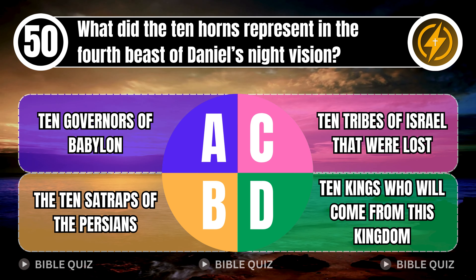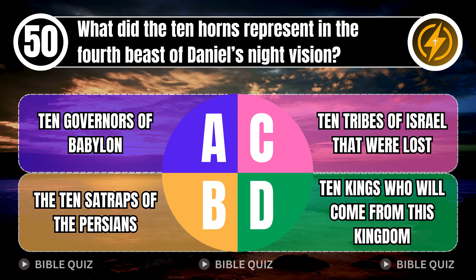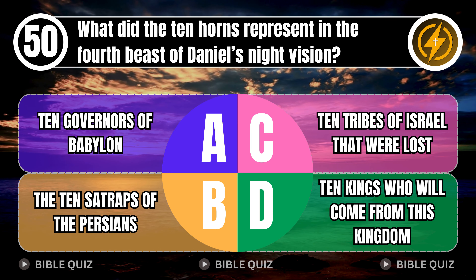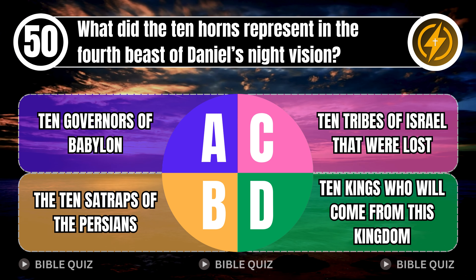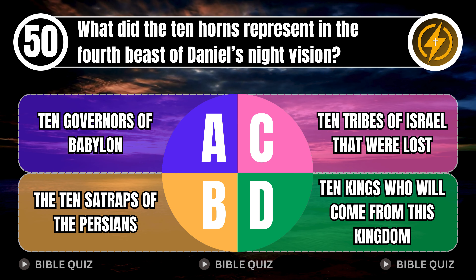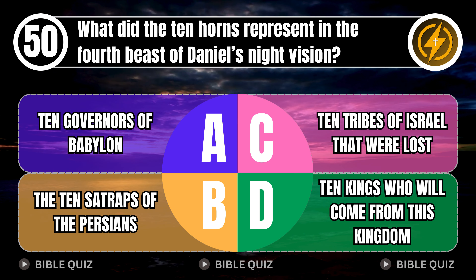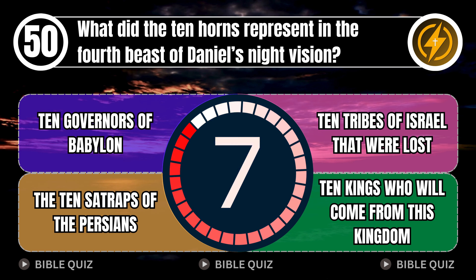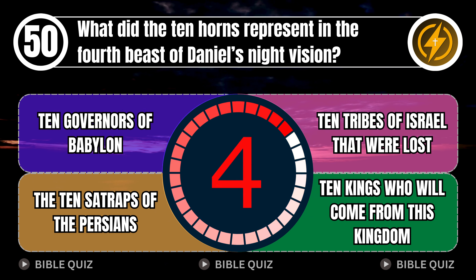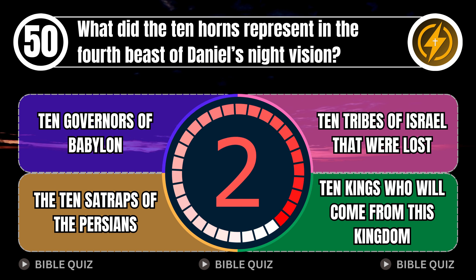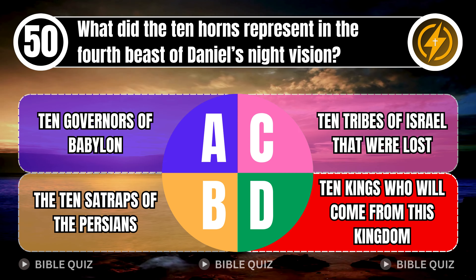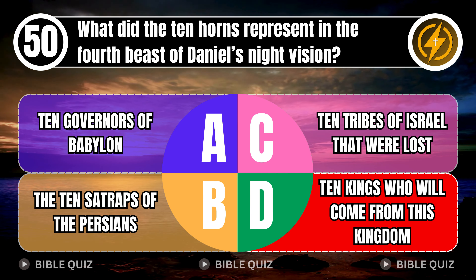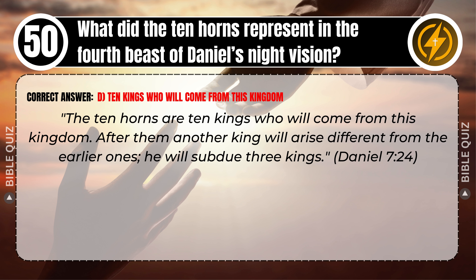Question 50: What did the ten horns represent in the fourth beast of Daniel's night vision? A. Ten governors of Babylon. B. The ten satraps of the Persians. C. Ten tribes of Israel that were lost. D. Ten kings who will come from this kingdom. Correct answer: D. Ten kings who will come from this kingdom. The ten horns are ten kings who will come from this kingdom. After them another king will arise, different from the earlier ones; he will subdue three kings. Daniel 7 verse 24.